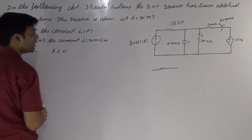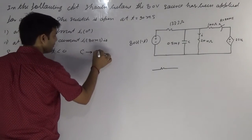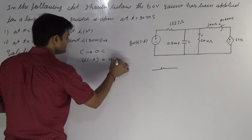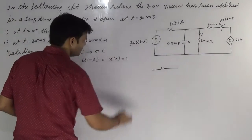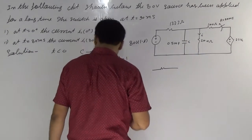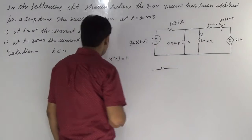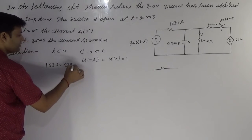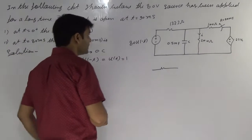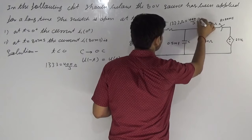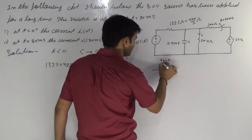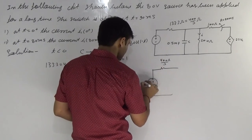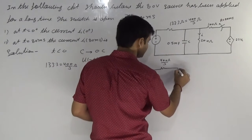At T less than zero, capacitor acts as open circuit. V(0 minus) it is like U(T), this is equal to one. Also written as one-third point three, this will equal to 400 by 3 ohm. The given circuit — 400 by 3 ohm — this is 80 volt, capacitor is open circuit.